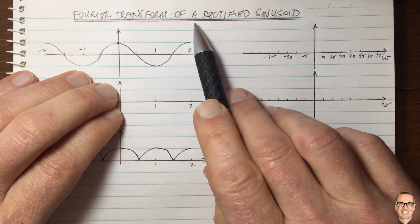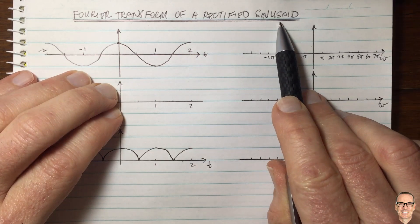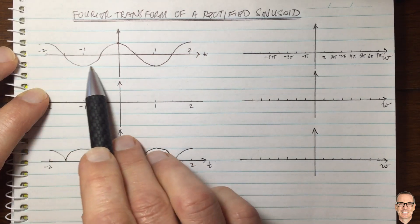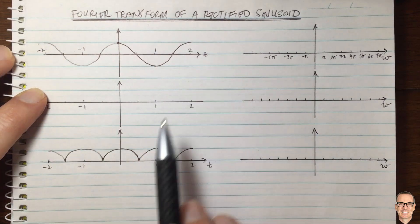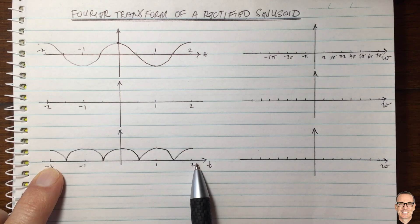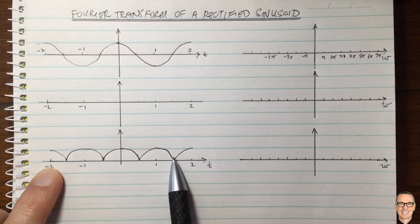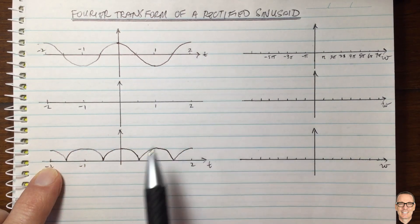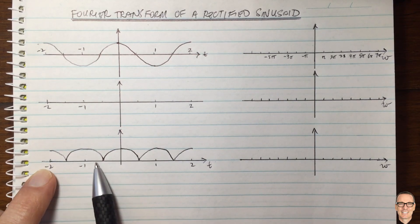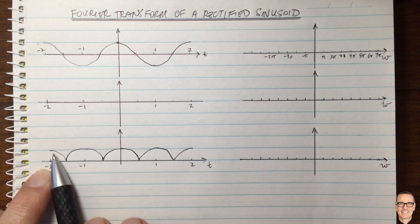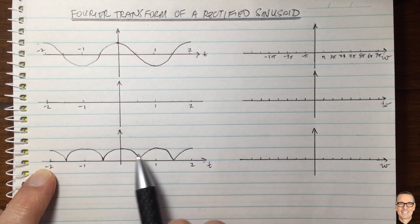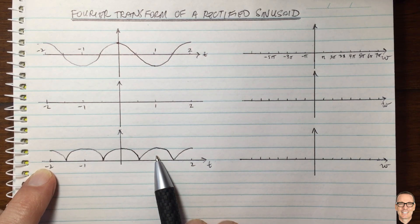What is the Fourier transform of a rectified sinusoid? This comes up quite often in power supplies, for example. Here's a cosine waveform, and below we have the rectified version where all the negative parts have been flipped to positive. Often if you take an AC power supply, you can make a DC power supply by rectifying the signal and then smoothing it out. We'd like to know about the bandwidth of this rectified signal, particularly for high-frequency rectification.